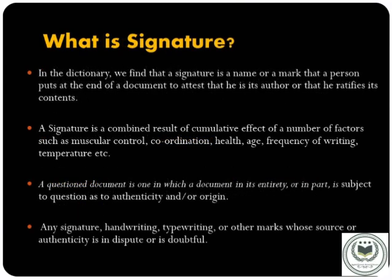To understand graphology, we need to learn what a signature is. A signature is a combined result of the cumulative effect of a number of factors such as muscular control, coordination, health, age, frequency of writing, temperature, etc. Signatures serve as a means of identification and are typically used in the course of business to authorize financial transactions or to establish the legality of important documents.